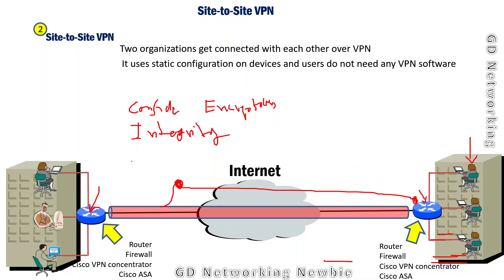VPN also provides authentication, ensuring that whatever is received comes from an authenticated node or authenticated user. Additionally, VPN protects against anti-replay attacks. These — confidentiality, integrity, authentication, and anti-replay protection — are the key security benefits of using a VPN connection.